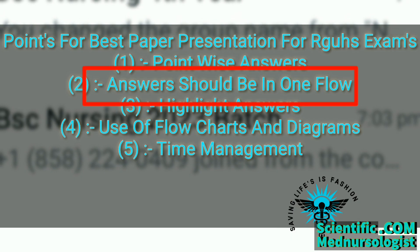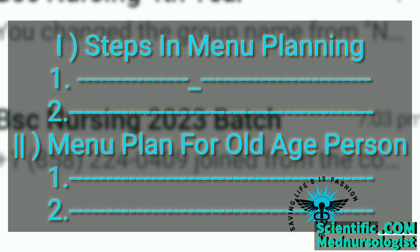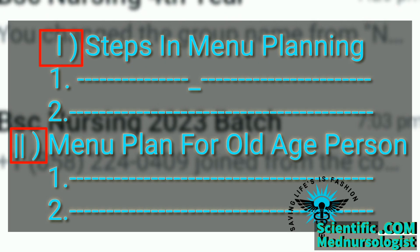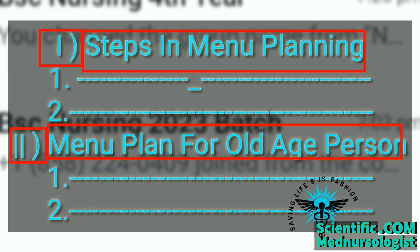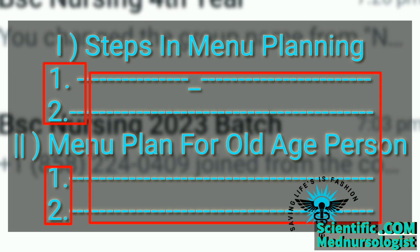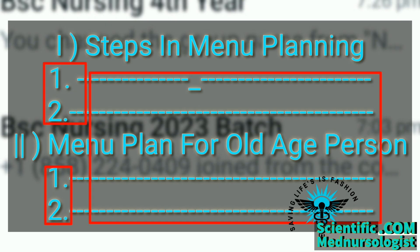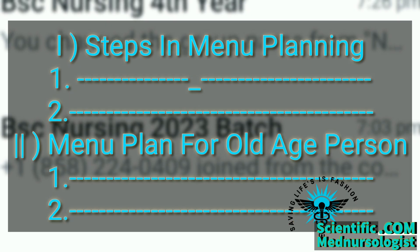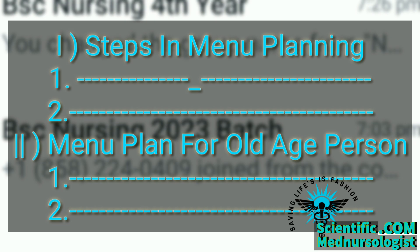Your answer should be correctly organized — make clear which point belongs to which topic. Use Roman numerals for headings and topics, and numbers (1, 2, 3) for writing individual points. Point out the answer in an organized and easily understandable manner. It looks easy to correct the paper and helps in scoring good marks.